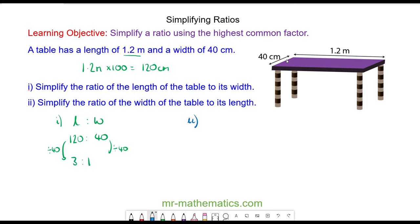For part 2, we're going to simplify the width to the length. The width is again 40 centimeters, the length is 120. Again, we divide both sides by 40, so now we have 1 to 3.